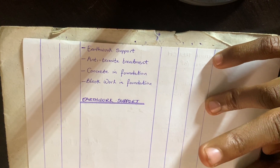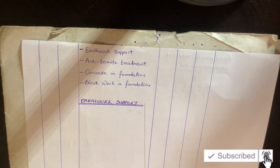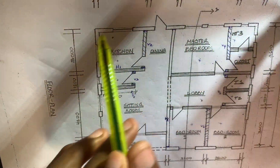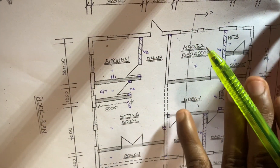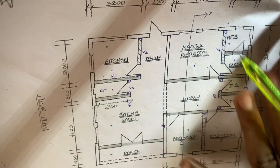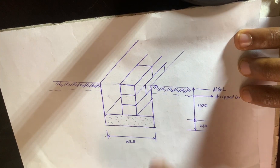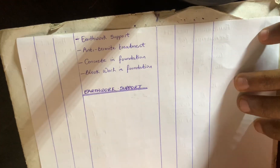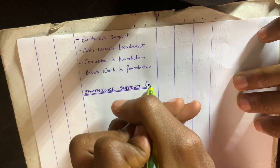To measure for earthwork support, we need two measurements: the girth of the entire building and the height of the trench. The shoring is going to be placed around the excavation of the trench, so we need the girth of the entire building and the height calculated for the trench in the previous video. Since we need both the girth and the height, earthwork support is measured in meter square.